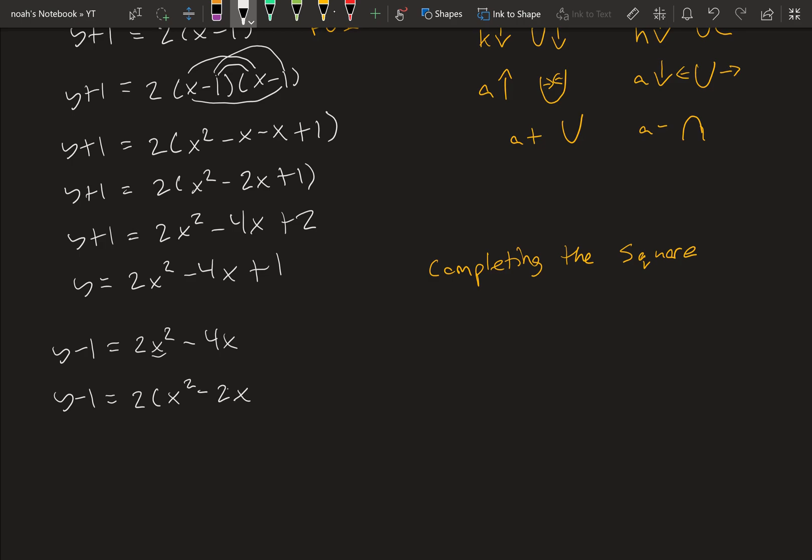Now we want to complete the equation. So we're missing the c term. To get this term, what we want to do is divide this second term by 2. So negative 2 divided by 2 is negative 1. Then we square it, which is negative 1 squared is 1. So we have plus 1 here.